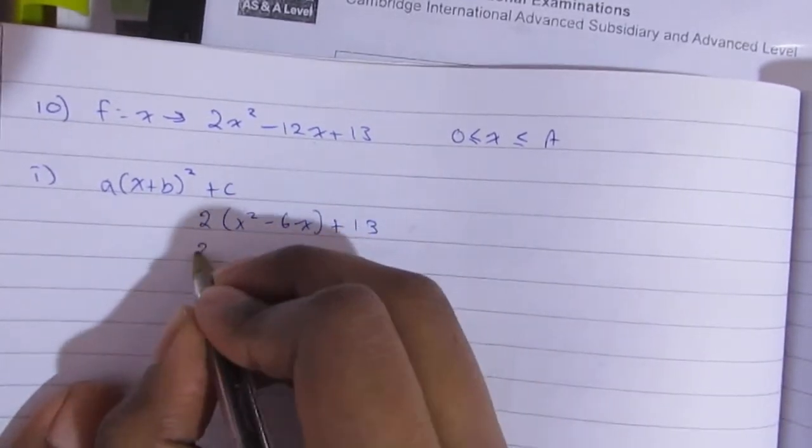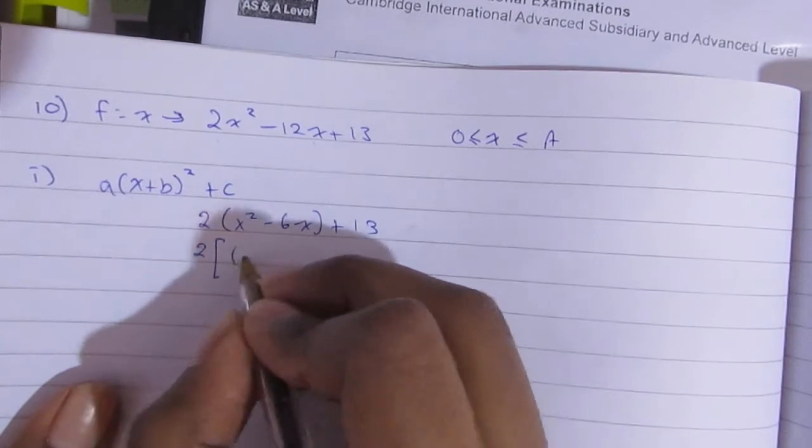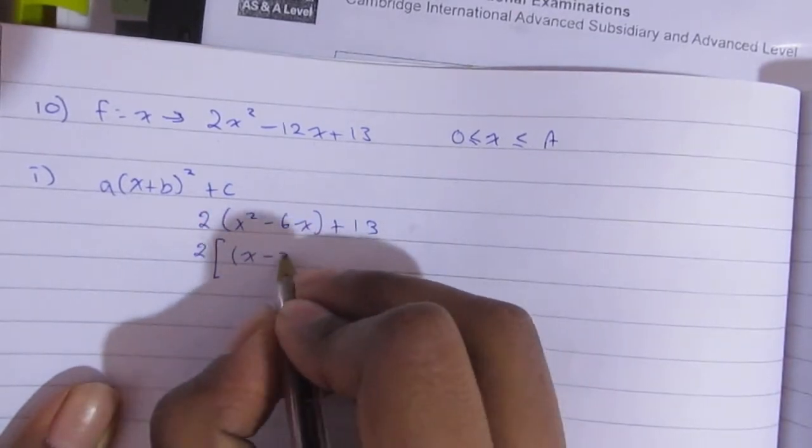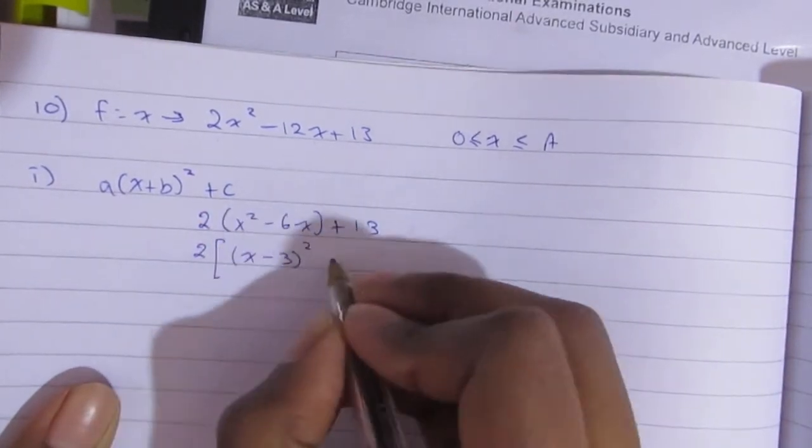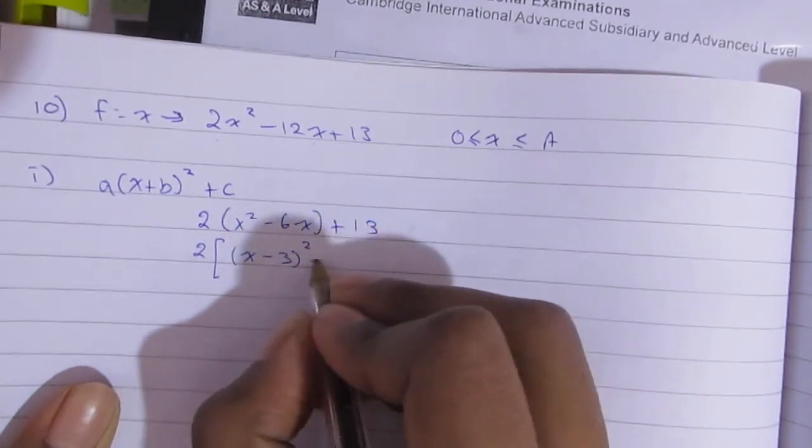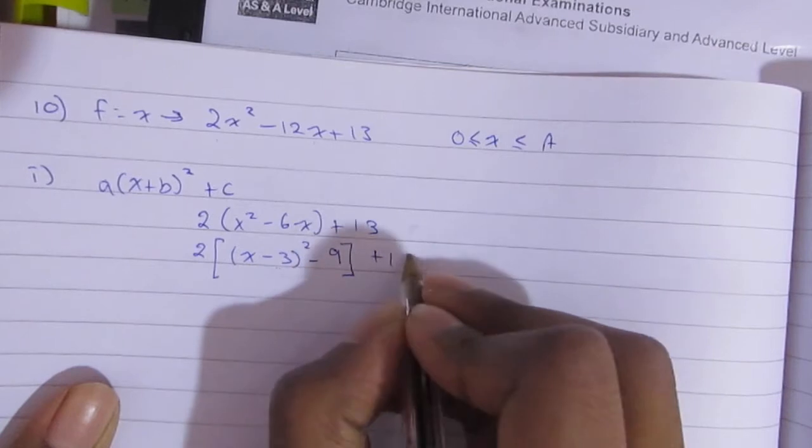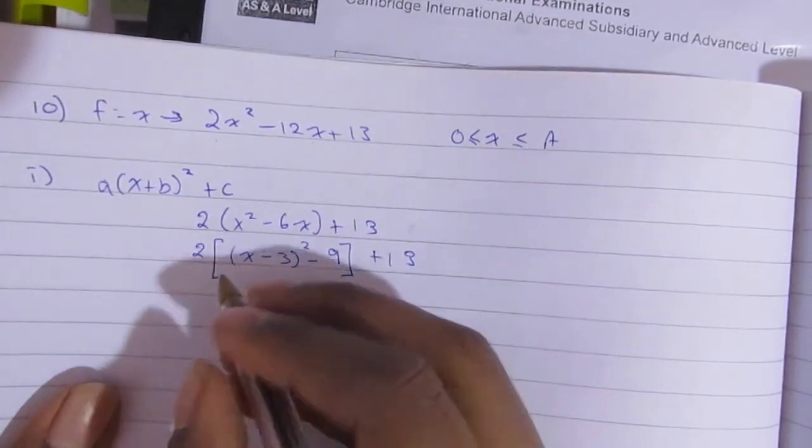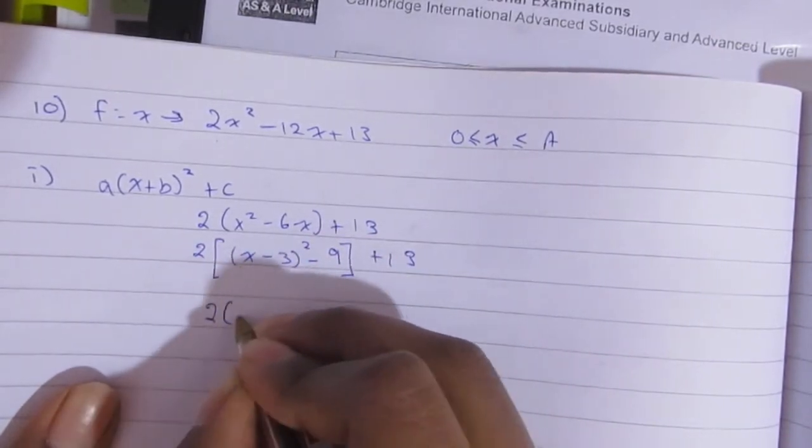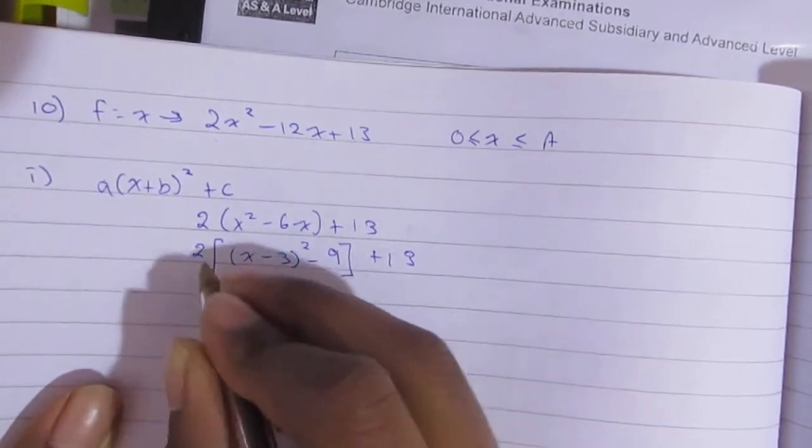Then we're going to try to get rid of the square. So then it's going to be (x minus 3) squared. What we're going to do is you see that negative 6x, you're going to divide that by 2, the coefficient. And negative 6 divided by 2 is negative 3. Then you're going to take that negative 3 and you're going to square it. So it's going to be 9 and you're going to place a negative in front of it.